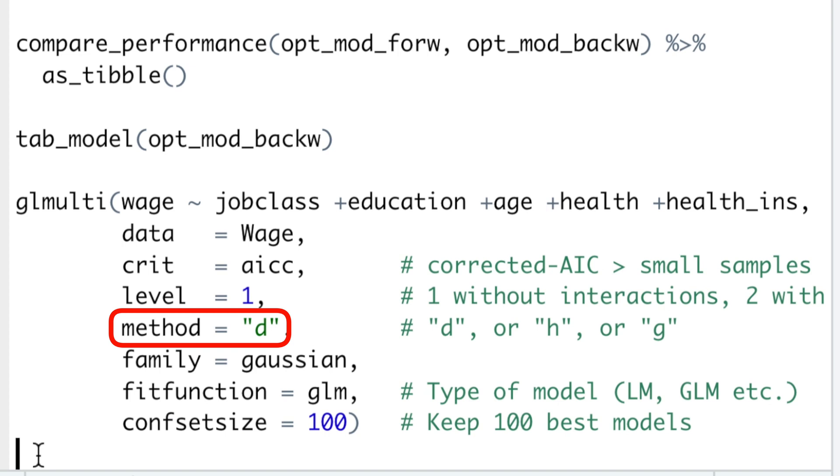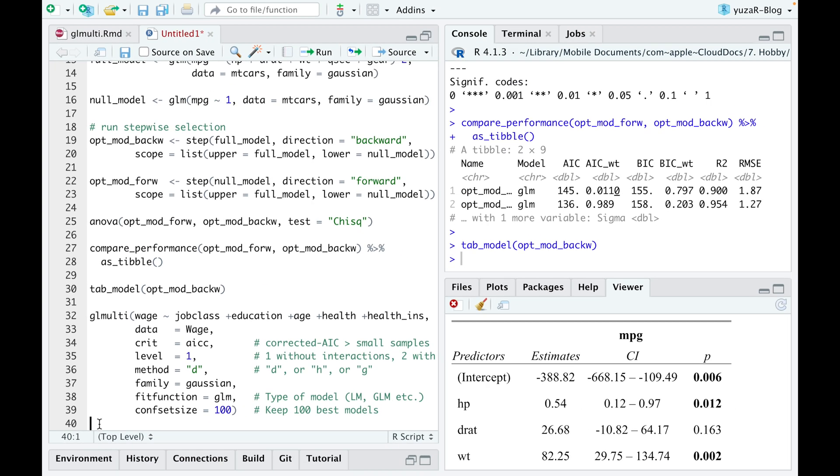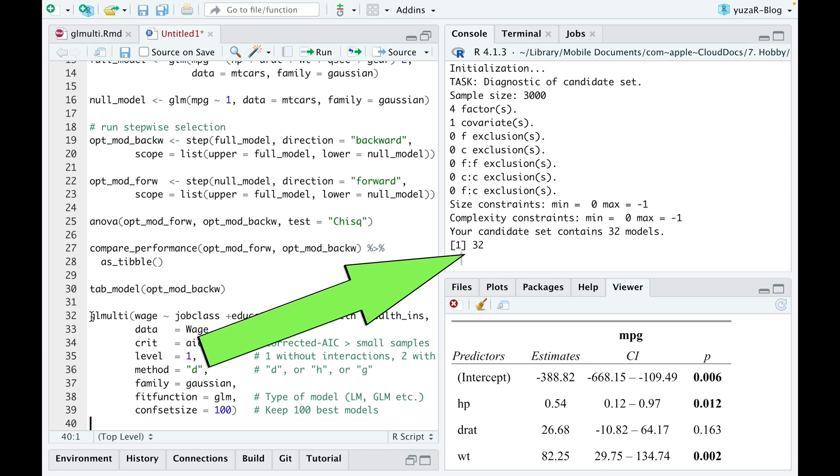The argument method explores the candidate set of models. Method equals d counts the number of candidate models without calculating anything. For our example of five predictors, we'll have 32 models without interactions, and 1921 models with interactions.